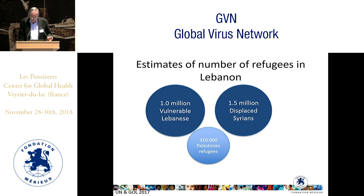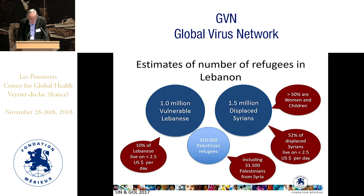In Lebanon, estimates put the Syrian refugee population at 1.5 million, but there are also 1 million Lebanese living under the same conditions. On top of that, 300,000 Palestinians live in closed camps sealed by the military every night for the last 50 years. That totals almost 3 million refugees in a country that originally had 4 to 4.5 million inhabitants. 50% of those Syrians are women and children, and almost 50% live on 2.5 dollars per day.